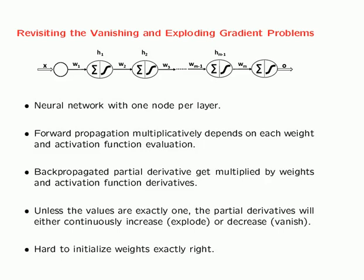In this case, forward propagation multiplicatively depends on each weight and activation function evaluation. The key point is that in backward propagation, the partial derivative gets multiplied by the weights and the activation function derivatives. So unless the product of the weight and the activation function derivative is exactly one, the gradients will either tend to increase or decrease. This is partially caused by the fact that the activations in different layers have different variances — they either tend to increase or decrease.